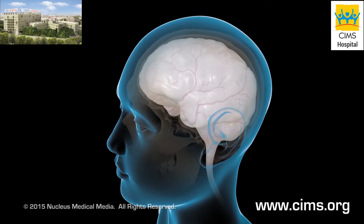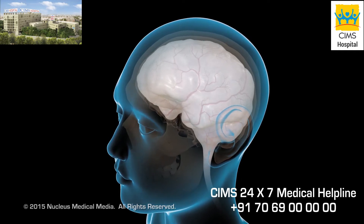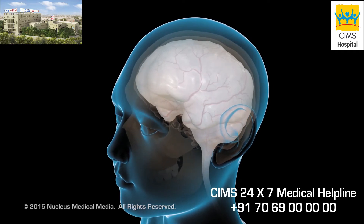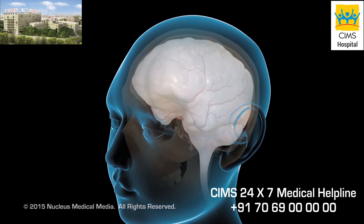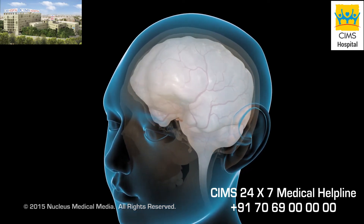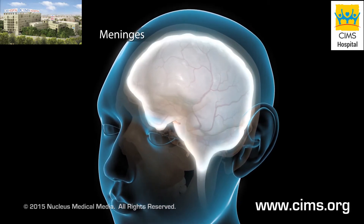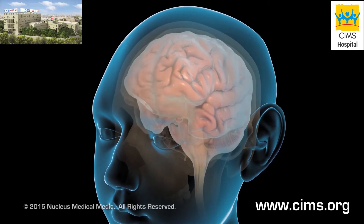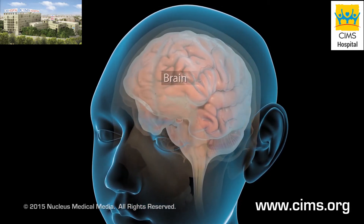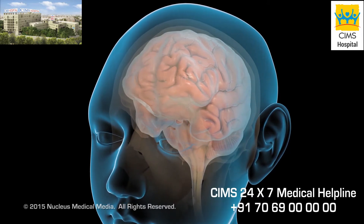Viral meningitis is an infection occurring mostly in children under age 5. It happens when certain viruses invade the meninges, which are the tissues that cover and protect the brain and spinal cord.